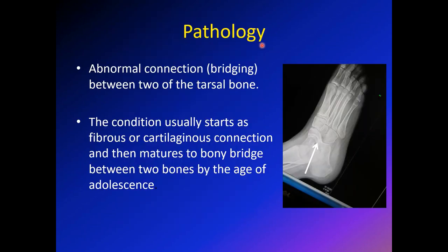The pathology in tarsal coalition is an abnormal connection or bridging between two bones of the tarsal bones. As you can see here, this is the calcaneus, this is the navicular, and there is an obviously abnormal connection between them. This condition starts usually as a fibrous or cartilaginous connection, and then with time this connection will mature into a more stiff bony connection around the age of 10 to 14 years.